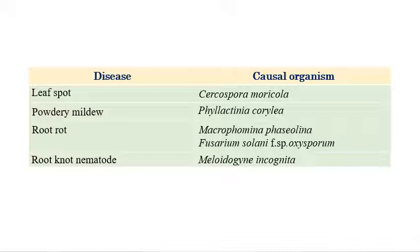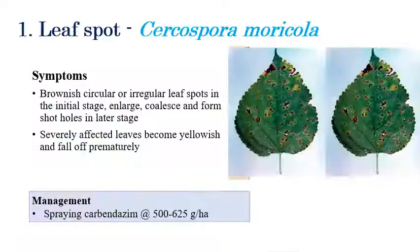The first one is leaf spot, which is caused by Cercospora moricola. Second is powdery mildew, which is caused by Phylactinia coralea. Third is root rot, which is caused by Macrophomina phaseolina and Fusarium solani forma specialis oxysporum. And root knot nematode, which is caused by Meloidogyne incognita. Now we will see each one in detail.